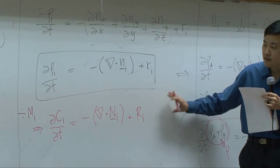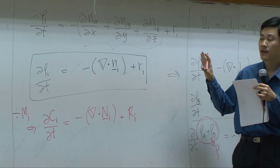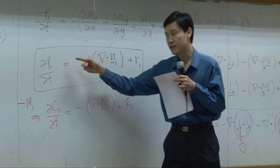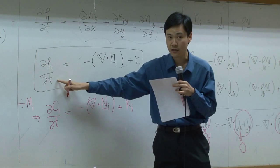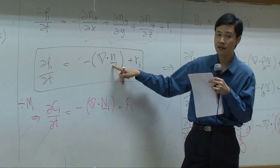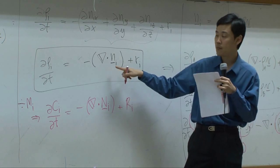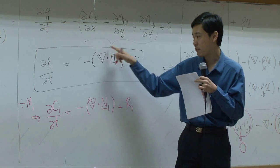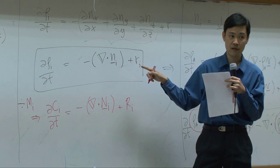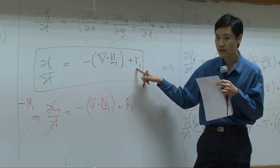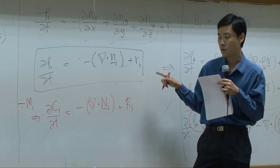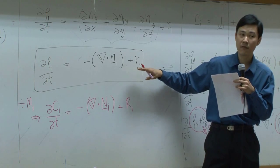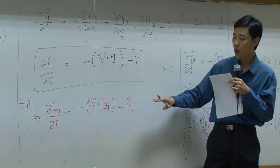You should notice that this equation is scalar. Every term is scalar, density is scalar, time is scalar. Only flux here is the vector, but this vector is dotted by del, so therefore, the product of the dot product should be a scalar. Production rate is scalar as well. This is a scalar equation. So you can either write it down in terms of mass basis or molar basis.